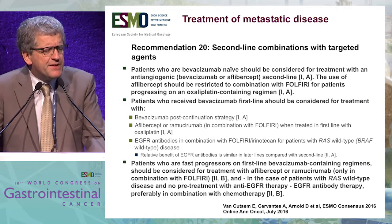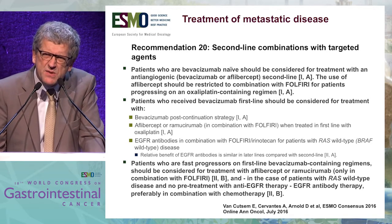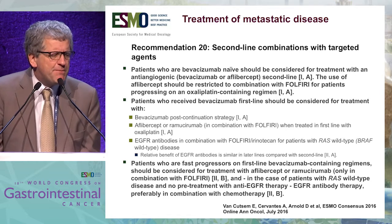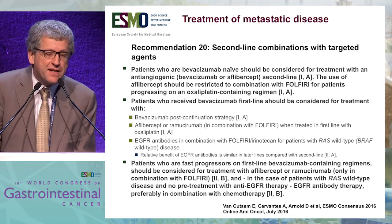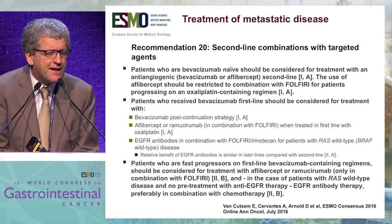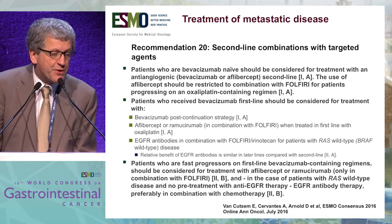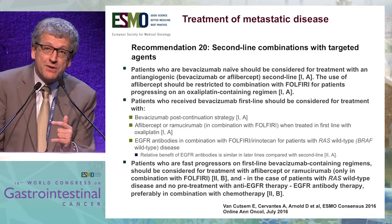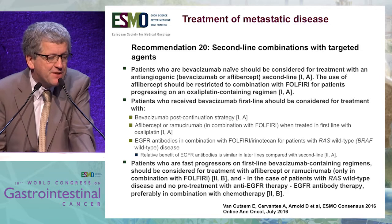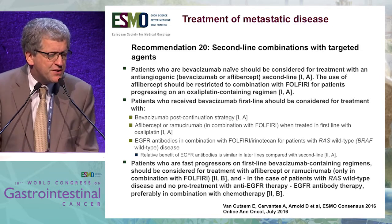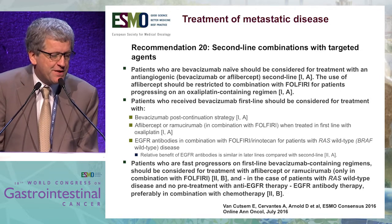For second-line treatment with targeted agents: patients who are bevacizumab-naive should be considered in second line for treatment with an anti-angiogenic agent — bevacizumab or aflibercept. The use of aflibercept should be restricted to combination with FOLFIRI for patients progressing on an oxaliplatin-containing regimen. Patients who received bevacizumab in first line should be considered in second line for bevacizumab continuation, aflibercept, or ramucirumab — all only in combination with FOLFIRI.